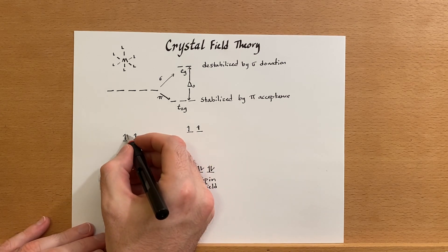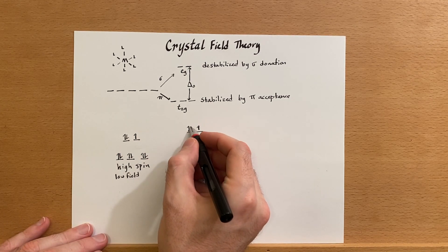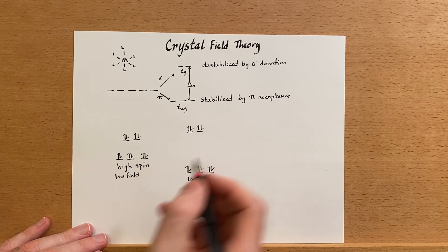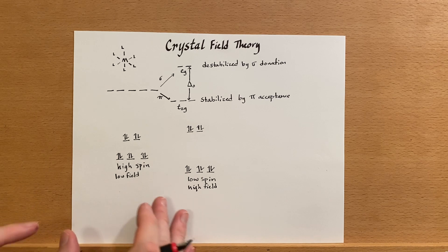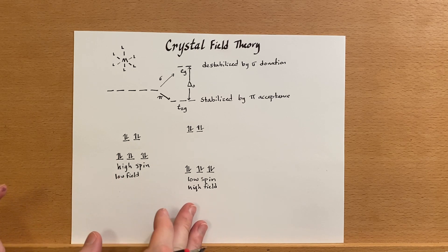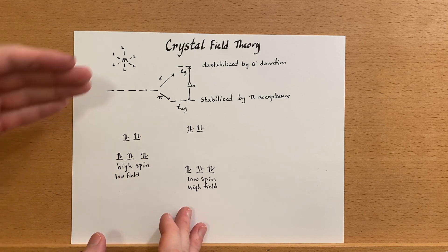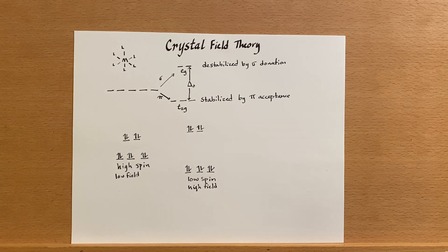And then d9, same thing. Same with d10. So those are the differences between high spin and low spin, and where they come from can be explained by crystal field theory.